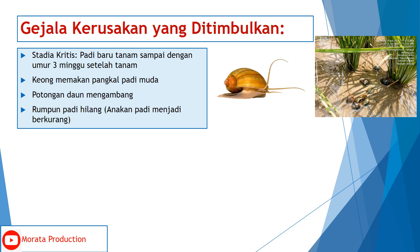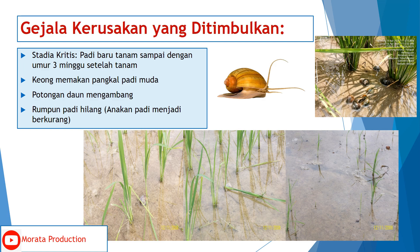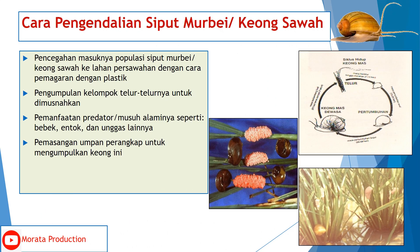Gejala kerusakan yang ditimbulkan: pada stadia kritis padi baru tanam sampai dengan umur 3 minggu setelah tanam, keong memakan pangkal padi muda. Potongan daun mengembang dan rumpun padi hilang, anakan padi menjadi berkurang. Berikut adalah gambar contoh padi yang terkena serangan keong.